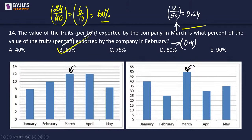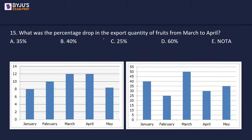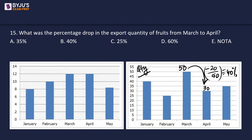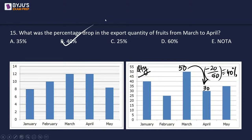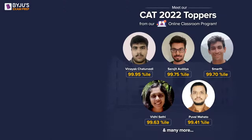Final question: what was the percentage drop in export quantity of fruits from March to April? March quantity = 50 tons, April quantity = 30 tons. Drop = 20 out of 50 = 40%. The answer is 40%. In the second set there was one typo, and in the third set the graphs were not properly labeled, causing some initial confusion. These sets are very simple and straightforward with minimal calculation, but speed is important.